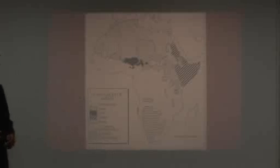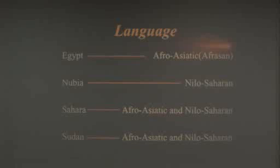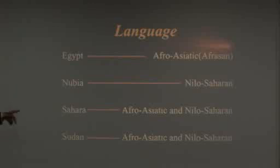Ancient Egyptian is an Afro-Asiatic language — sometimes called Afrosan by Chris Ehret or Afrasian by the Russian linguist Dakhonov. Nubian is Nilo-Saharan. In the Sahara and the Sudan, both Afro-Asiatic and Nilo-Saharan languages are spoken. Roger Blench, who lives in Cambridge, published a linguistic tree suggesting an Erythraic group encompassing Egyptian, Berber, Chadic — spoken around Lake Chad and northern Nigeria — as well as Beja, spoken in Sudan and Egypt today, and the Cushitic languages.